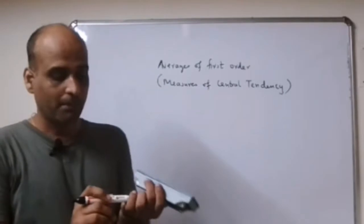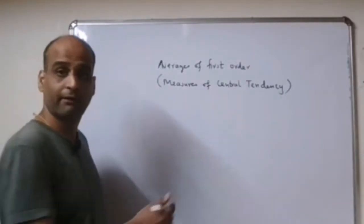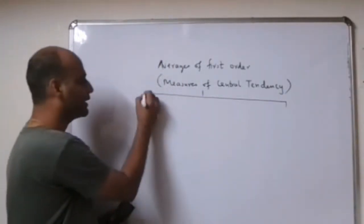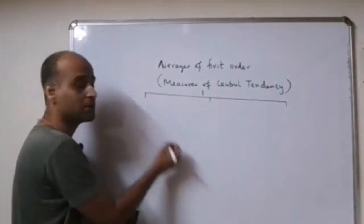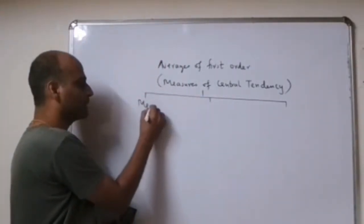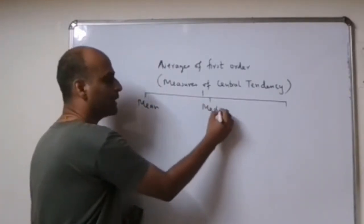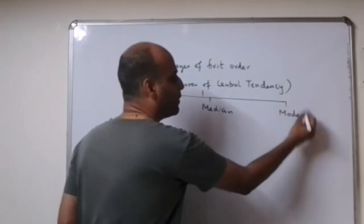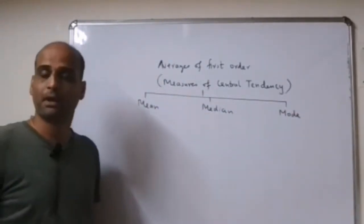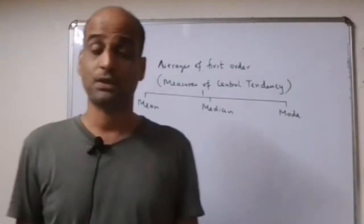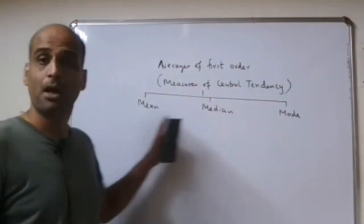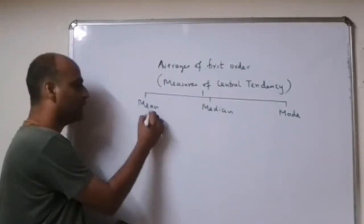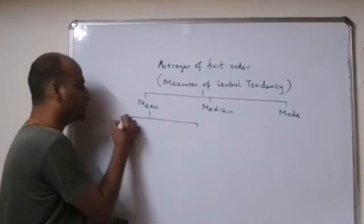Now basically we divide measures of central tendencies into three. The first one is the mean, next comes median, and the last one is the mode. So three types of measures of central tendencies are mean, median, and mode. Now mean again you could split into three.